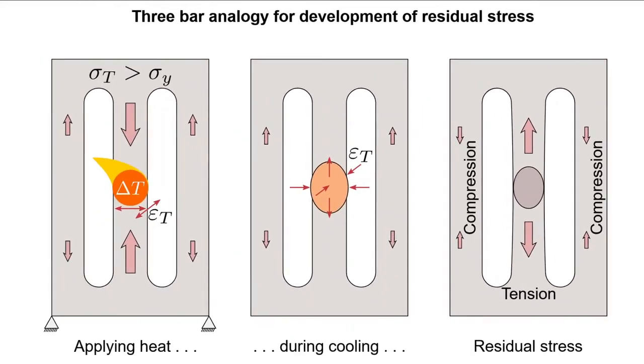There is some point during the cooling process where the stresses in the outer ligaments switch relative to the stress in the central region, which creates the residual stress state described. Let's get into why that occurs using a simple physical analogy.